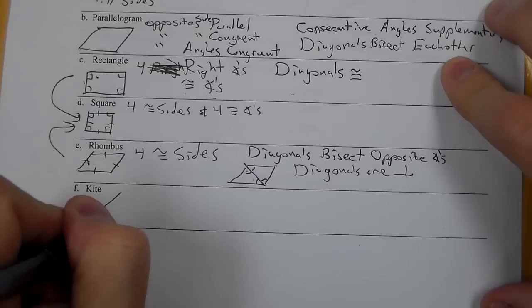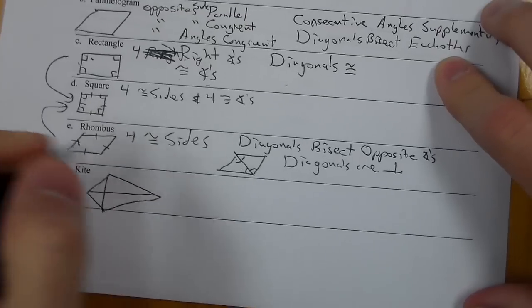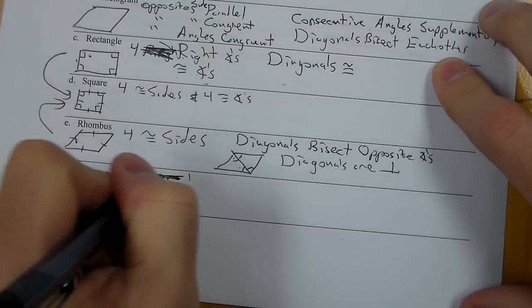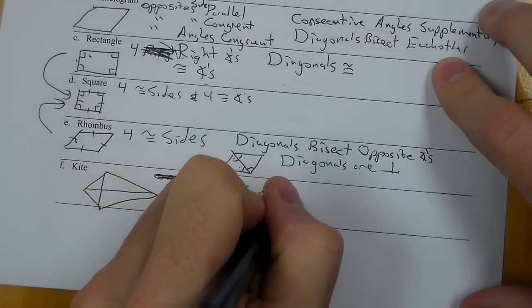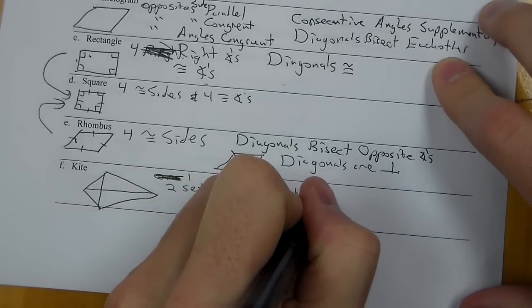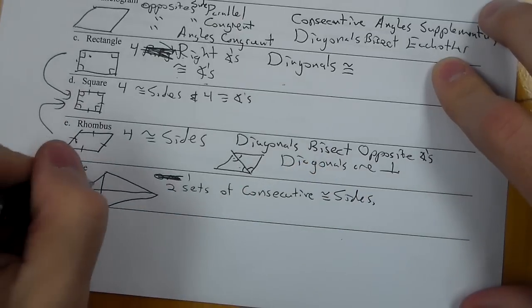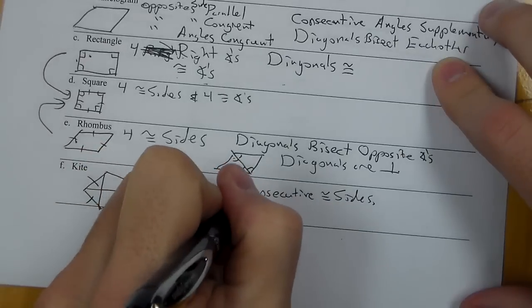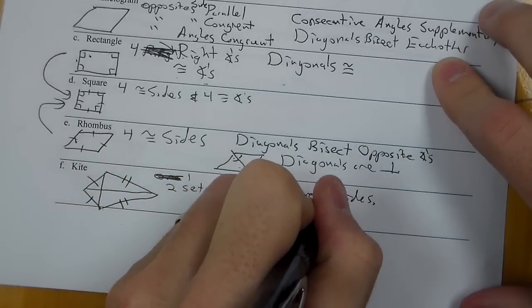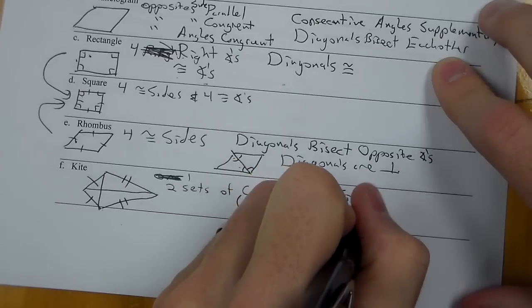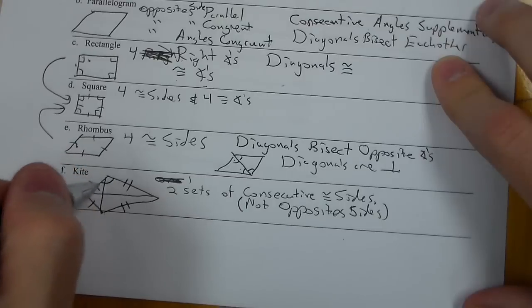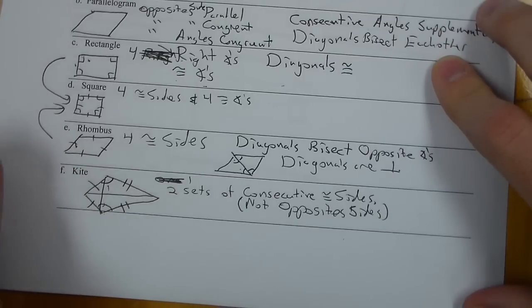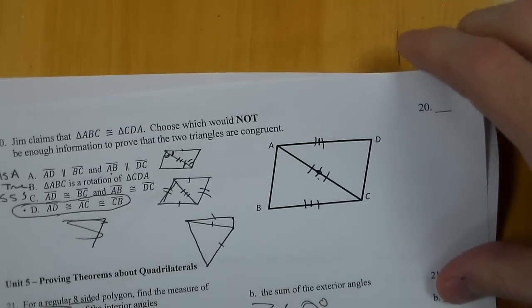Last one is a kite. We didn't do much with kite. We just need to know, first off, that it has two sets of consecutive congruent sides, not congruent angles, congruent sides. That would be these two and these two, and that means not opposite sides. Because if it was opposite sides, it would be a rhombus, but they are consecutive sides. Diagonals are also perpendicular. In a kite, it also has one set of angles congruent, the ones between the congruent sides.